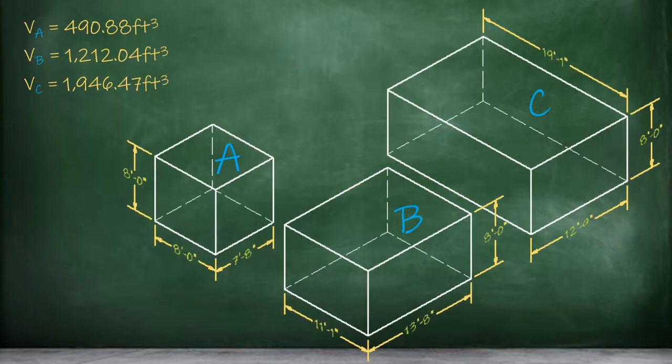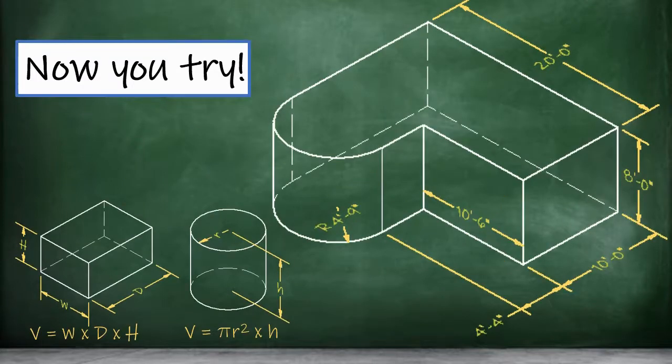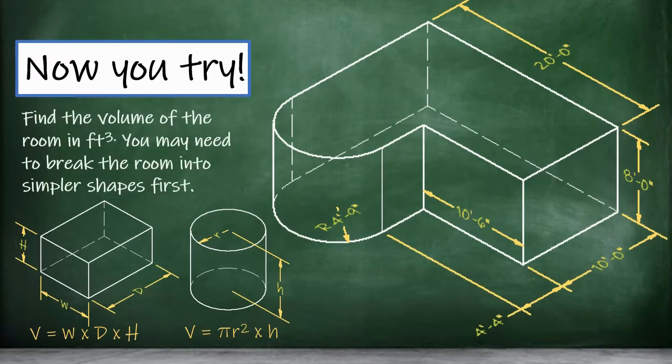To get our total volume, all that's left is to add up the volume of the three parts. The volume of part A plus part B plus part C equals a total volume of 3,649.39 cubic feet for our entire common living space in our example house. Now you try. Find the volume of the room shown here. Use the method shown in the example to break the complex shape down into simpler shapes that we have volume formulas for. Remember to convert any dimensions given in feet and inches into decimal feet before performing the volume calculations.